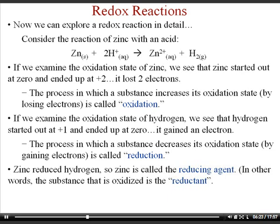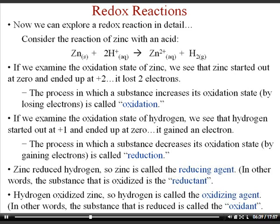Zinc reduced hydrogen, so zinc is called the reducing agent. In other words, the substance that is itself oxidized is called the reducing agent, or sometimes the reductant. If you're reduced, you're called the oxidizing agent, or sometimes the oxidant. Students need to be able to determine which substance is oxidized, which is reduced, which is the reducing agent, and which is the oxidizing agent — and you do that by looking at the oxidation numbers of the elements on both sides of the reaction.